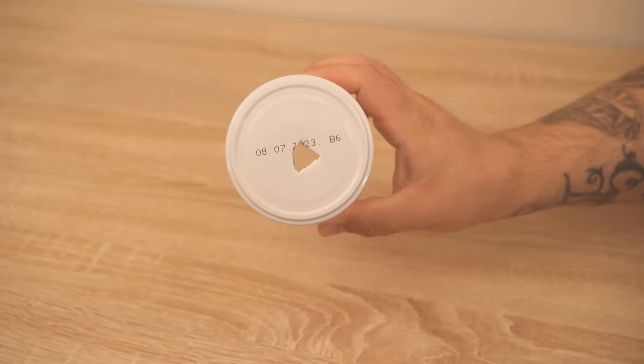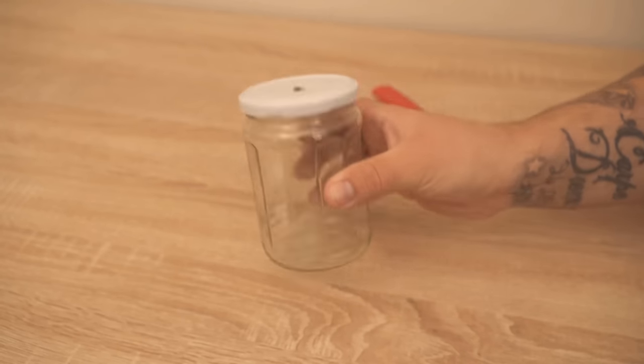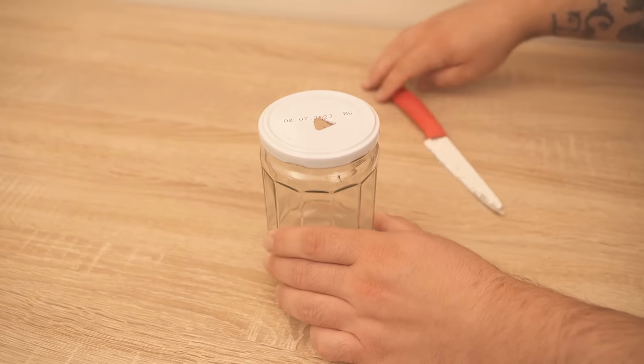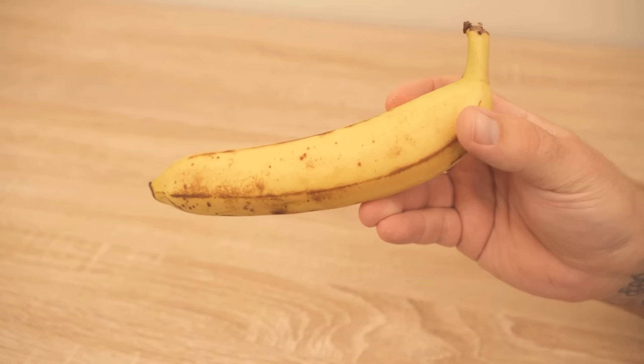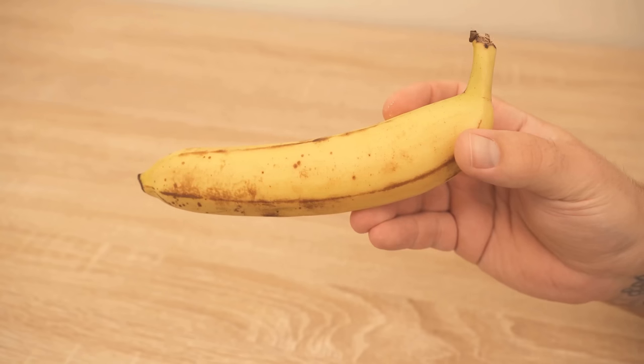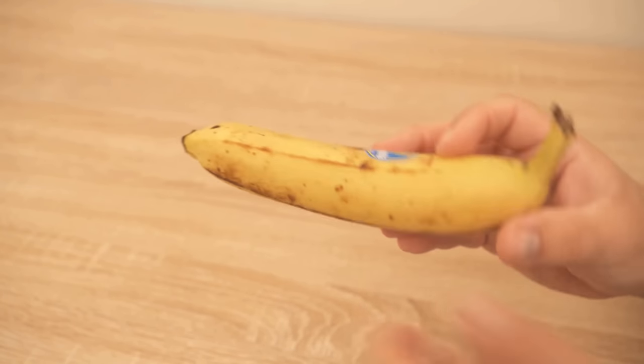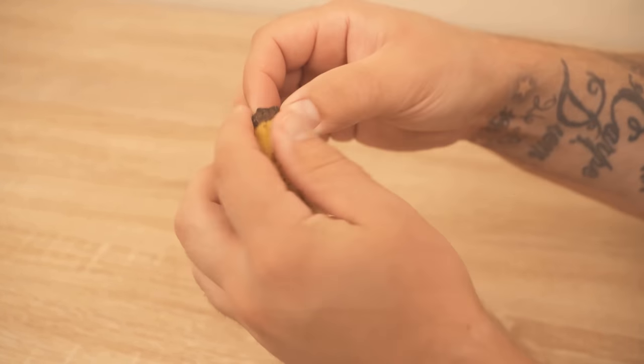Next we need a banana, because we still need some kind of attractant which now ensures that the flies also go into the fly trap. And the best thing for this is a banana. We simply cut a few small slices from it and then place them in our fly trap.